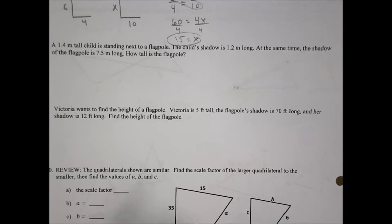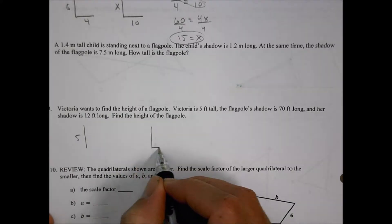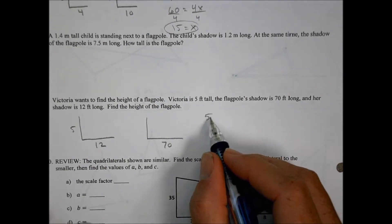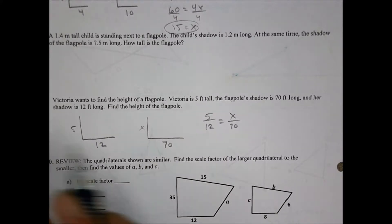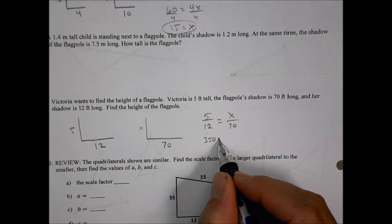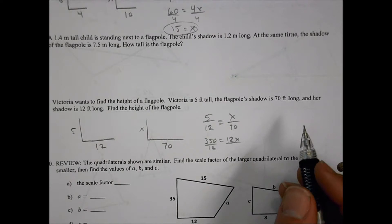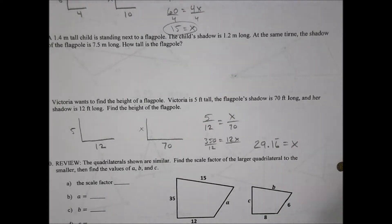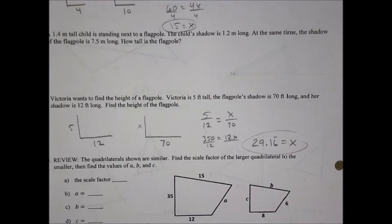Number nine. Victoria wants to find the height of a flagpole. Victoria is five feet tall. The flagpole's shadow is 70 feet long, and her shadow is 12 feet long. Find the height of the flagpole. Same idea. We're going to do five is to 12 as x is to 70. We can cross multiply here and do 70 times five, which is 350 equals 12x. We'll divide both sides by 12. And 350 divided by 12 is 29.16, and a lot of 6 is repeating there, feet.